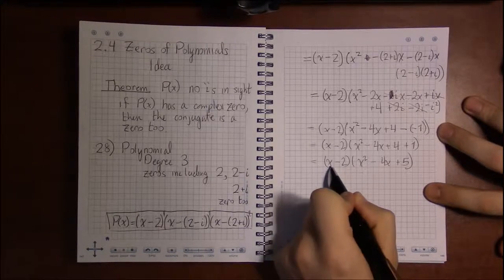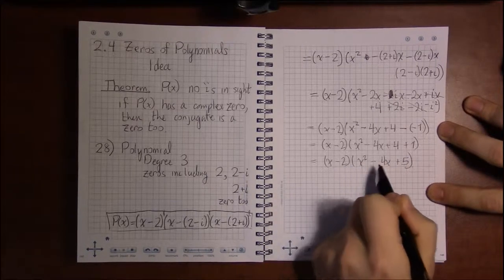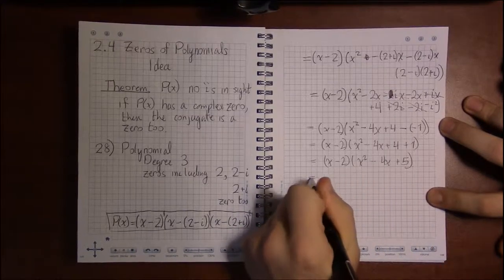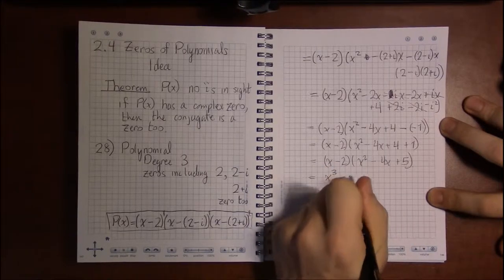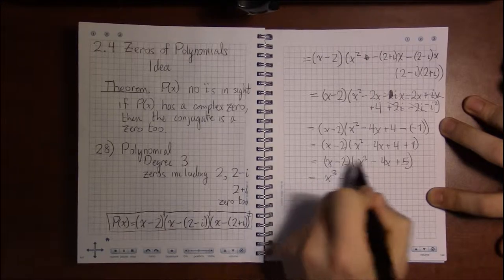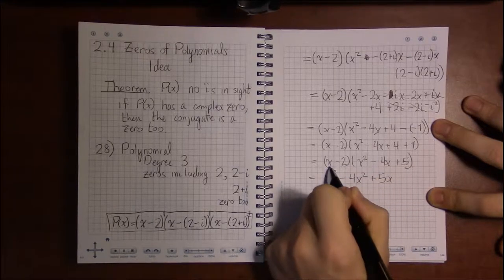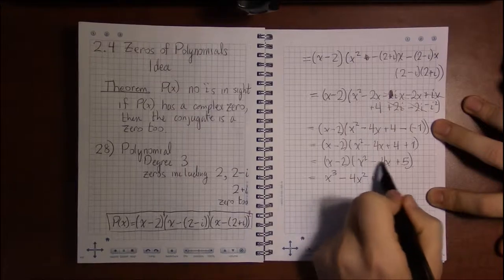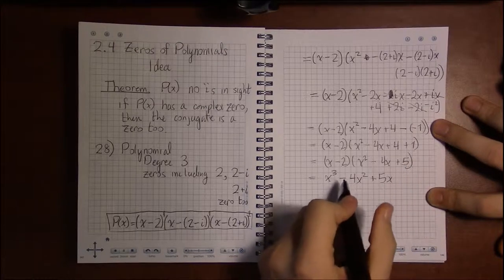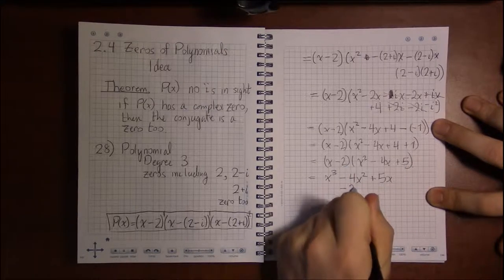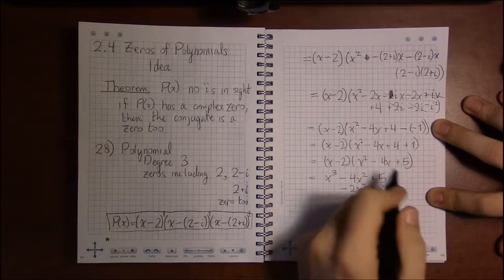Now one more distributing. x has to hit each of these three factors, and -2 has to hit each of these three factors as well. So that's going to be x times x² is x³, x times -4x is -4x², x times +5 is +5x. So x multiplied each one of these three in the other set of parentheses. Now -2 in the left has to multiply each of the three things on the right. And that's -2x²+8x-10.